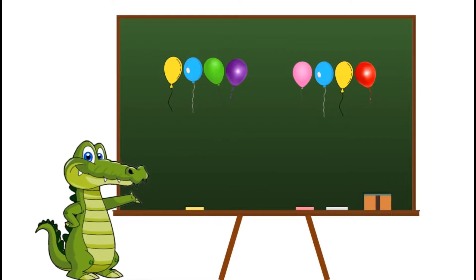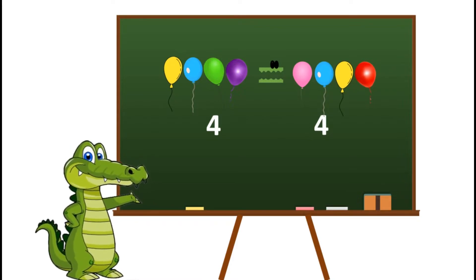Let's count the number of balloons. On the left side: one, two, three, four balloons. And on the right side there are one, two, three, four balloons. As we have the same number of balloons on both sides, we will put an equals to sign and we will say that four is equals to four.